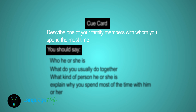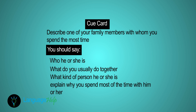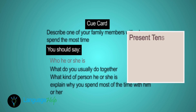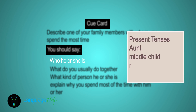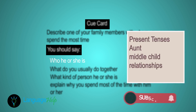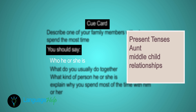Let's discuss the cues and see what we can do. The first cue is who he or she is. On your paper, draw a box and note down the tense you'll be using to accomplish this specific task. If you cannot decide on the tense, you can always rely on the tense of the cue — in this case, the cue tense is simple present. Think of family and relationship vocabulary. For our answer, the family member will be an aunt who is the middle child in her family.